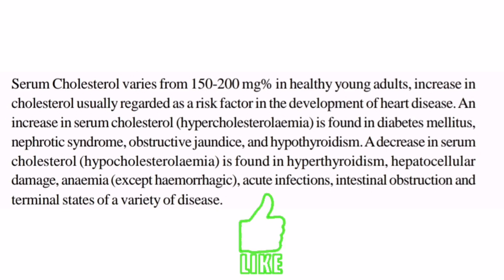Conditions that decrease cholesterol include: anemia, acute infections, intestinal obstruction, and terminal states of various diseases. Hepatocellular damage involves damage to liver cells. Excessive bleeding causes hemorrhagic anemia. The conditions that decrease cholesterol are: hemorrhagic anemia, hepatocellular damage, hyperthyroidism, acute infections, intestinal obstruction, and terminal states of disease.